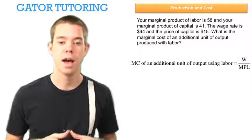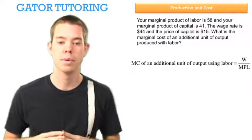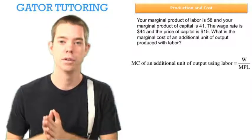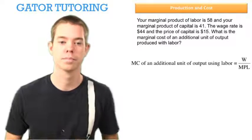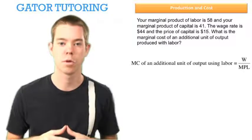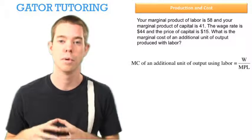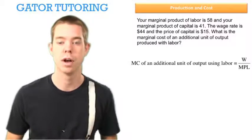We define that as W over MPL, with the cost on top and the marginal product on bottom. The question could have been asked in a different form, but we put it in this form: W over MPL.